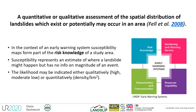Landslide susceptibility maps are a quantitative or qualitative assessment of the spatial distribution of landslides which exist or potentially may occur in an area. In the context of an early warning system, susceptibility maps form part of the risk knowledge of a study area.